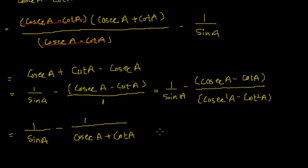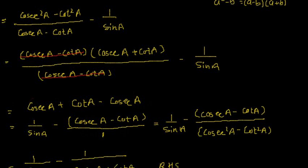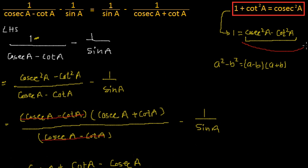So what we get is exactly the right hand side of the equation. We have proved it. We used the formula — where 1 can be written as cosec²A minus cot²A — two times. We have one more problem with a similar procedure, so keep watching Math Smart. Bye-bye till then.